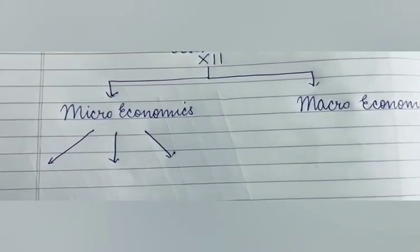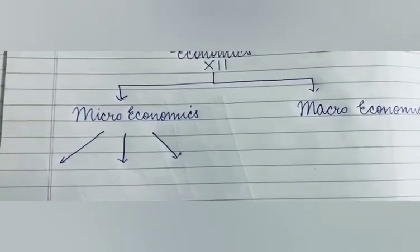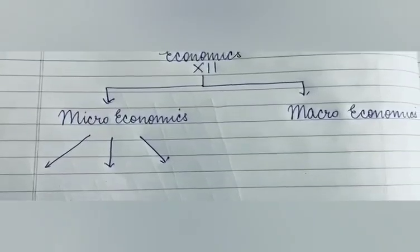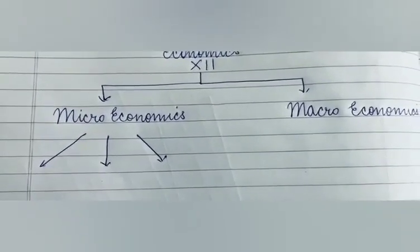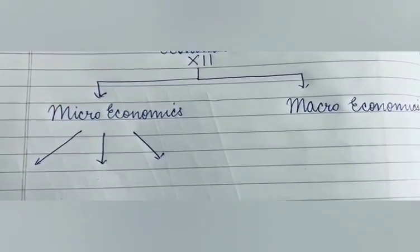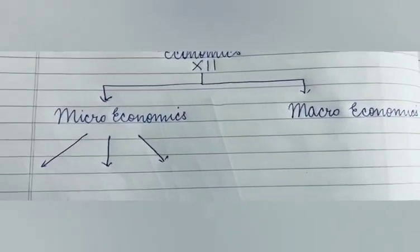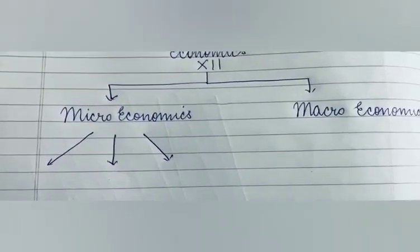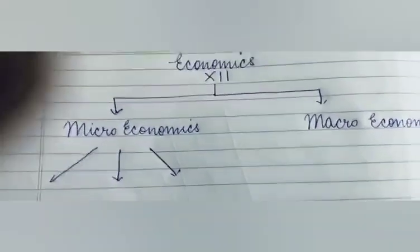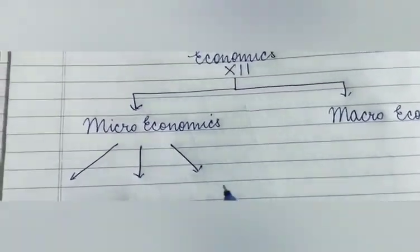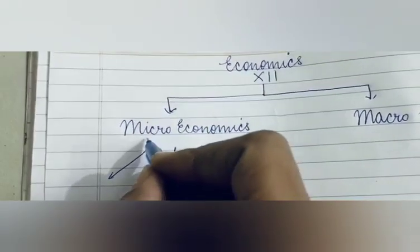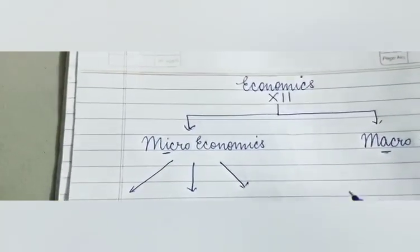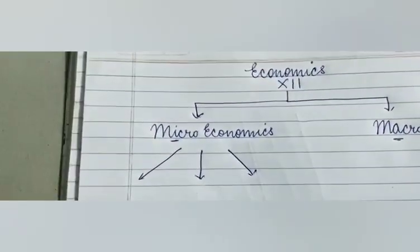Before starting with the chapters, your class 12 economics has been divided into two parts — one is microeconomics and the other one is macroeconomics. You must be knowing the basic difference between micro and macro. There is a slight difference of 'i' and 'a' — this is 'i' and this is 'a'.